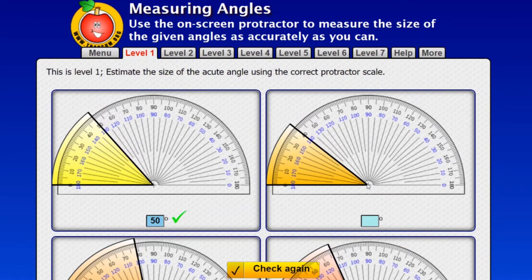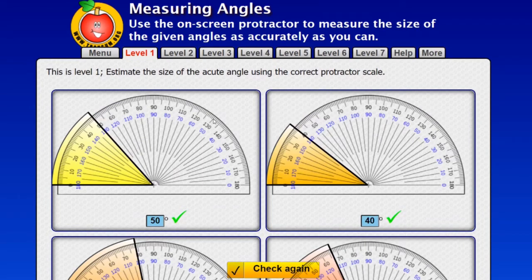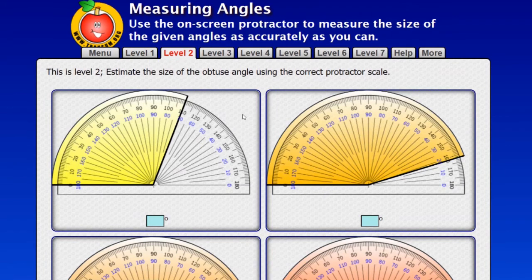The second one, again, we start counting from 0, and this one is 40 degrees. And that is correct. Now, in level 2, the angles are a bit bigger, but it's still the same procedure.